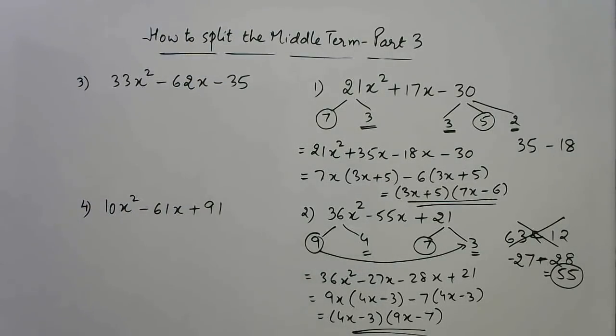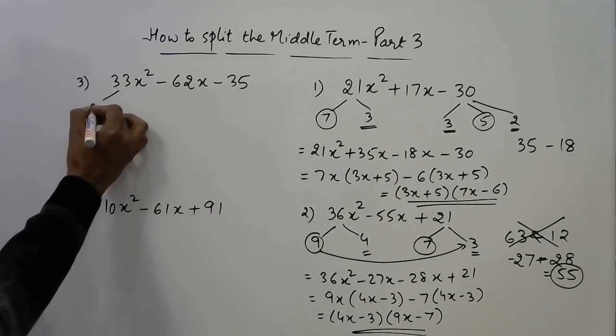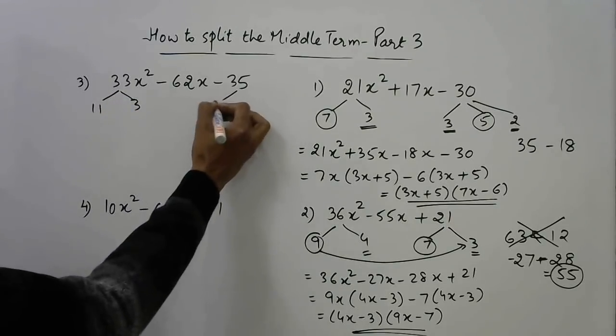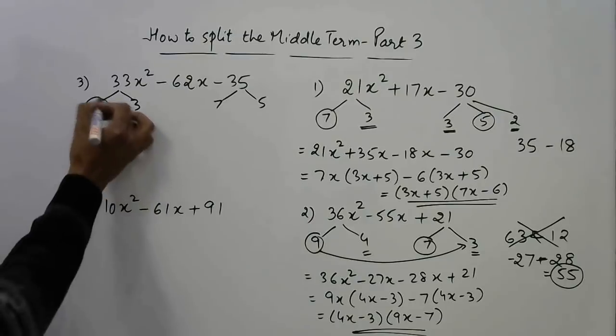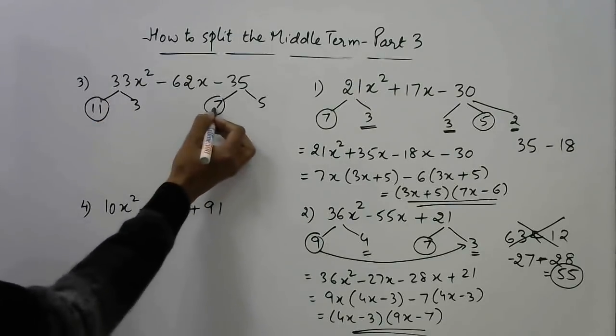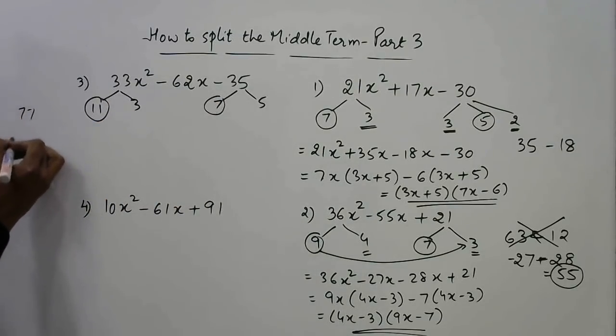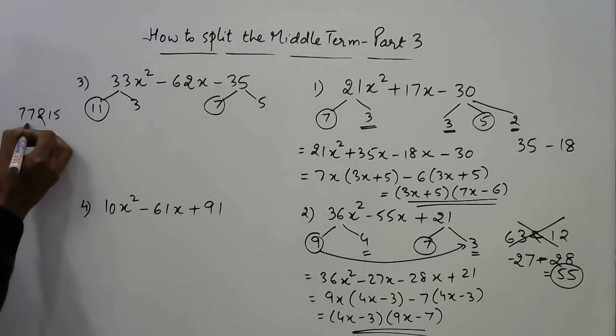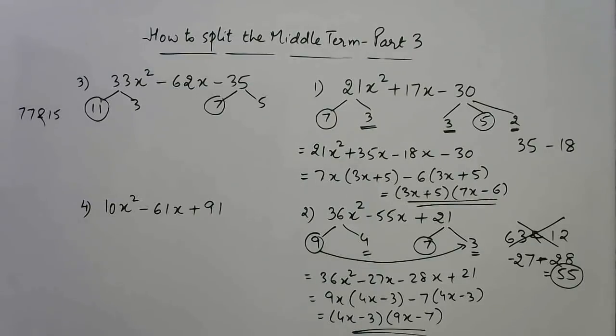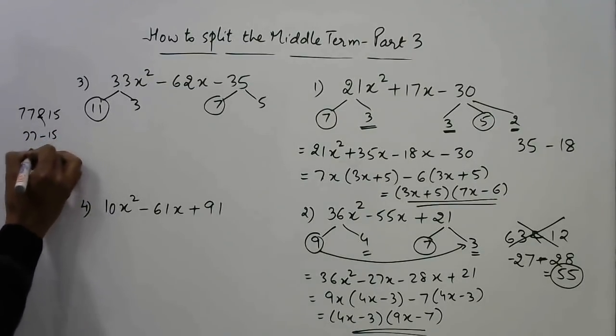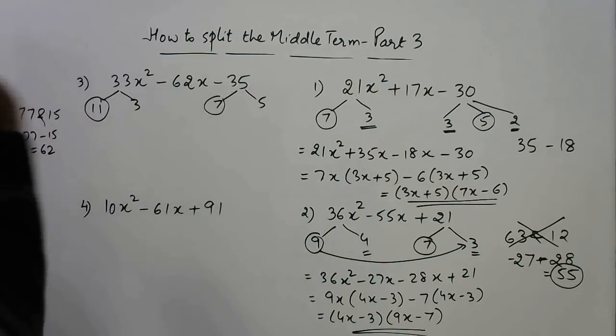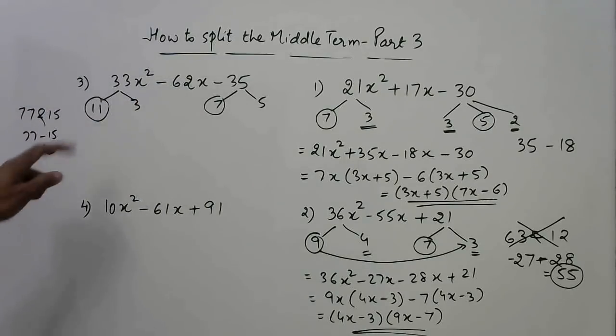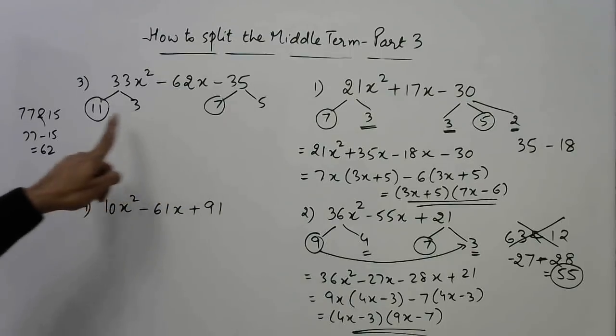So let us have two more questions. See in this case we have 33 as the coefficient of x² and the constant term is minus 35. So let us factorize this 11 and 3, factorize this 7 and 5. So I will combine the largest with the largest here, 11 times 7, it is 77 and 3 times 5, 15. 77 and 15 do you notice? That 77 and 15 the difference is 62 which is exactly required in the center here.